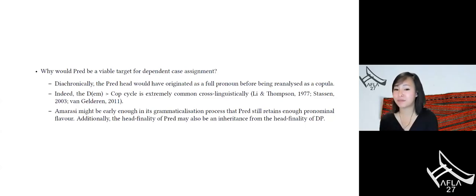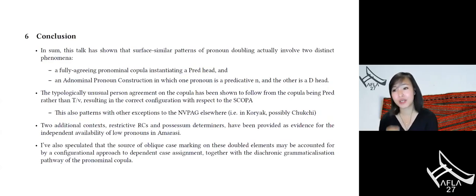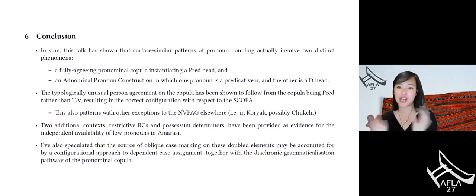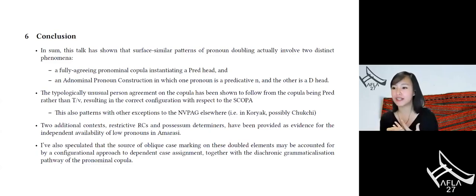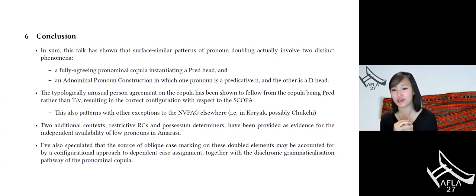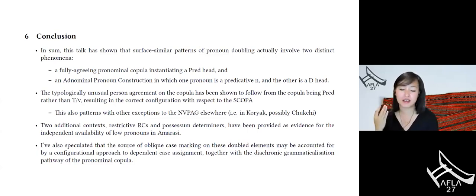Why would a Pred head be a viable target for dependent case assignment? There could be a diachronic explanation: it is extremely common for pronouns to grammaticalize into copulas — the dem-to-cop cycle happened in Old Chinese and Old Egyptian. If this Pred head really was a pronoun, Amarasi may be early enough in the grammaticalization process that it retains just enough flavor to get oblique case marking. Another benefit is that it could explain why PredP is head-final, as an inheritance from the fact that DP, which the pronoun originally was, was also head-final. In summary, I've shown how two surface-similar patterns of pronoun doubling have entirely distinct constructions, connected typologically unusual full person agreement to structural generalizations on first and second person transmission, and given additional contexts to test for predicative low pronouns.